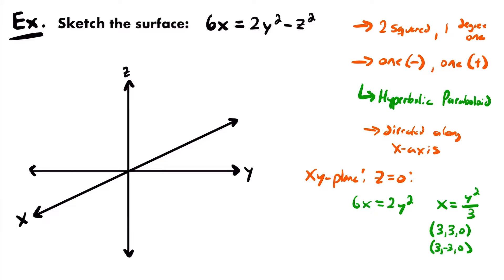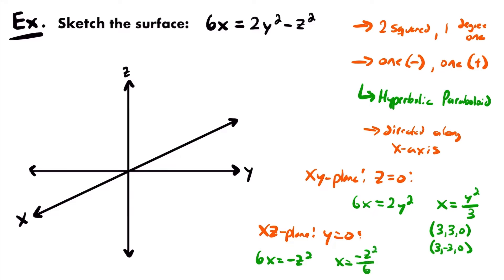Now for the xz-plane, set y = 0. The y term disappears, giving 6x = -z², and dividing by 6: x = -z²/6. This parabola is in the xz-plane, opening towards the negative x-axis. For two points, I'll use z = ±6: 6² = 36, and -36/6 = -6. So our two points are (-6, 0, 6) and (-6, 0, -6).